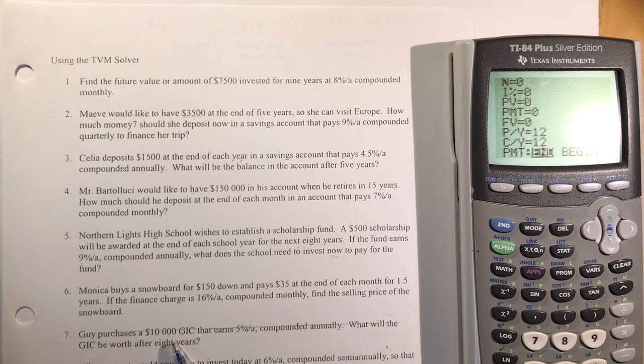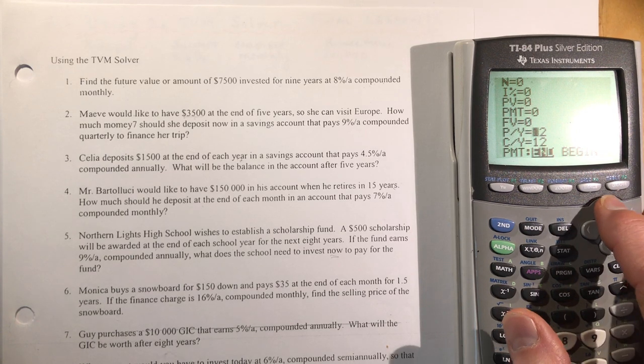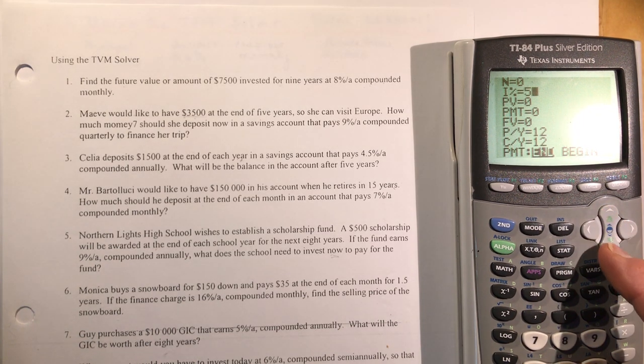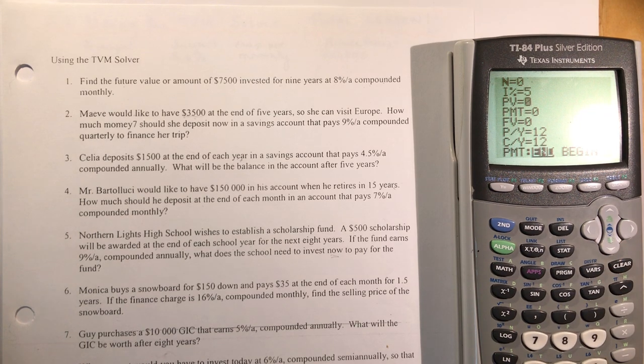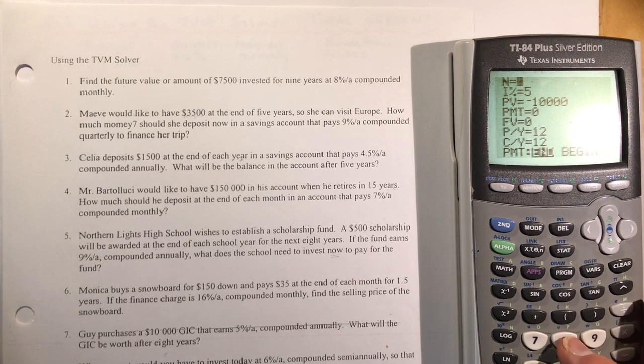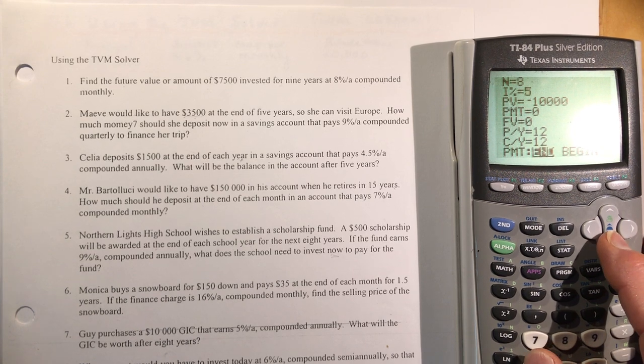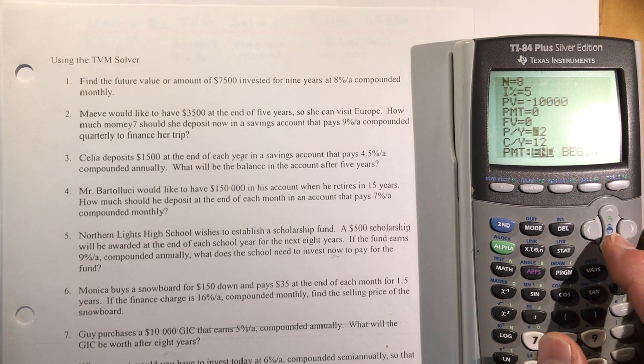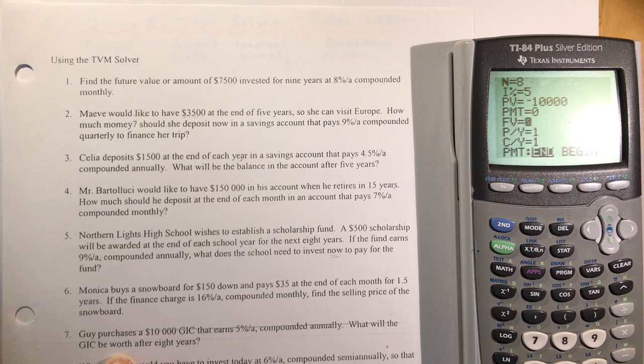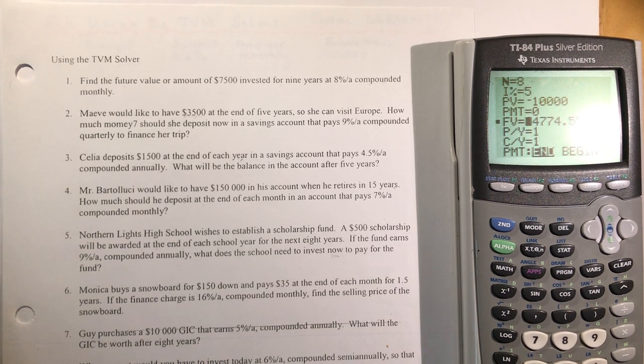Guy purchases a $10,000 GIC that earns 5% per annum. Let's put the 5 in right away. He's going to put it in the bank right now. The present value is $10,000, and he's putting it in the bank, so I'm going to make that negative. It's going to sit there for eight years compounded annually. That means 8. We need to change this to one. What will the GIC be worth in eight years? I'm going to do alpha enter for future value. It'll be worth $14,774.